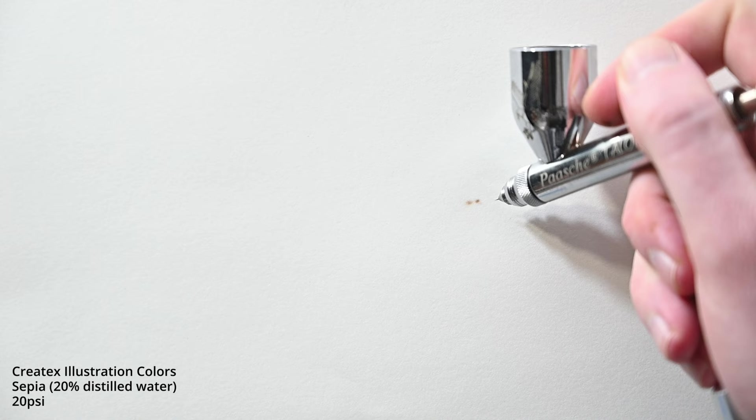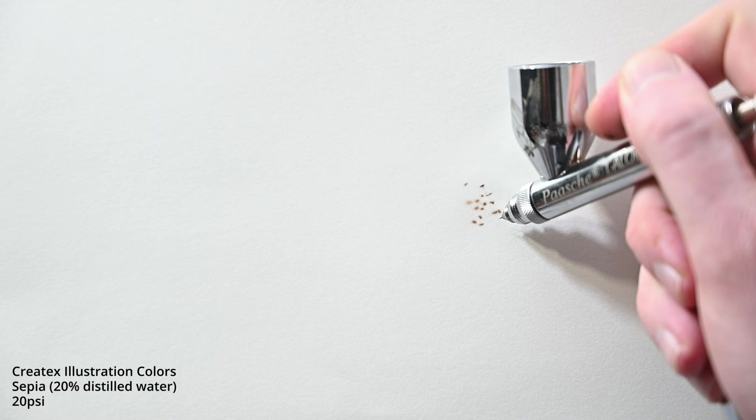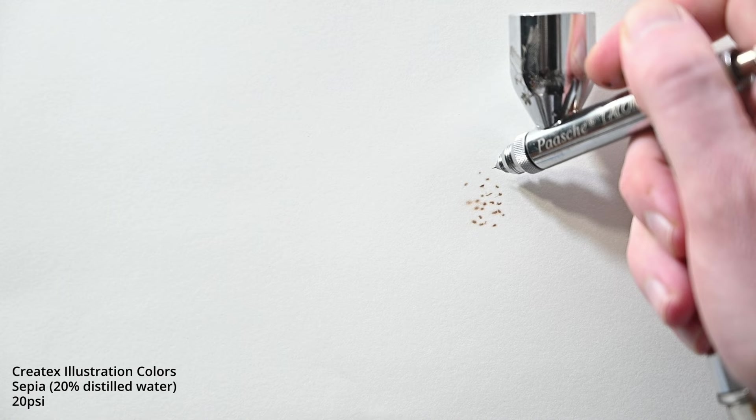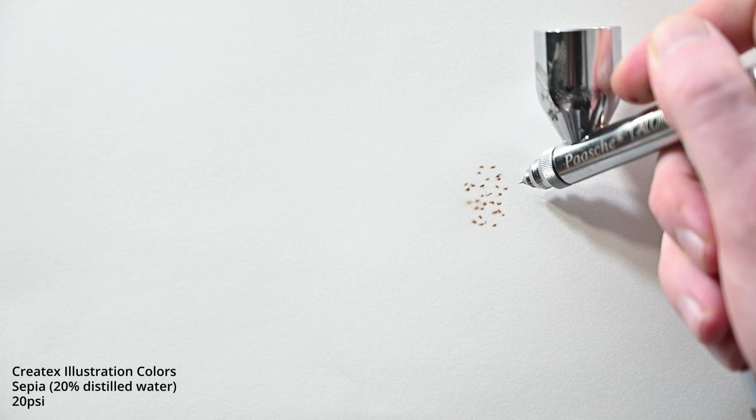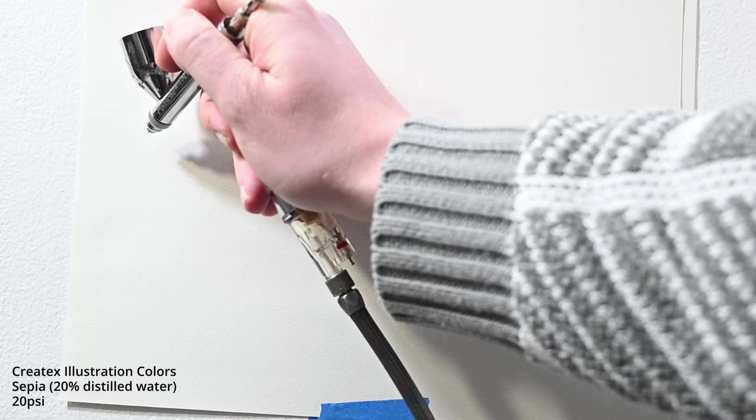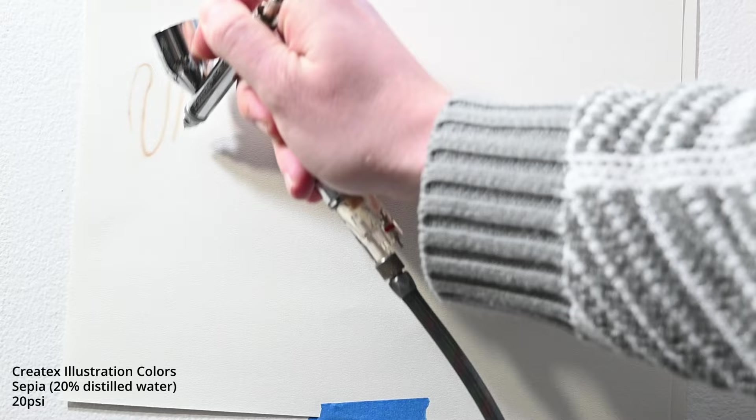Moving along to the trigger response. This airbrush is very good. It starts spraying paint at the same point every single time, but I did notice that it's a little bit farther back than what you see in badger airbrushes or Iwatas. And I just want to point out it doesn't matter what the paint looks like. All I'm doing here is seeing how far I have to pull back on the trigger to get some paint on the paper. So I'd consider this response rate to be very good and consistent.